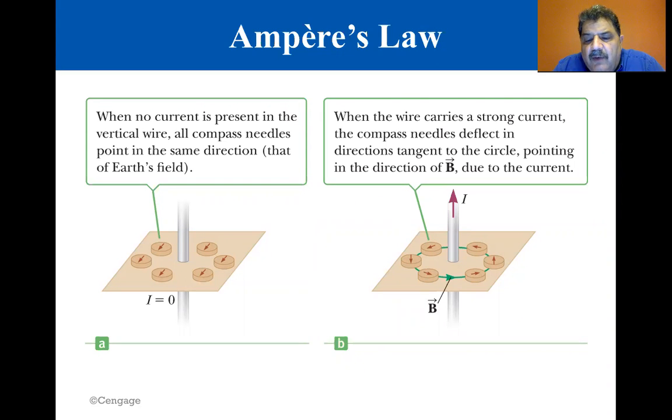When there is no current in the wire, as shown in the figure on the left, all needles point in the same direction, that of the earth's field, as one would expect. When the wire carries a strong steady current, as shown in the figure on the right, the needles all deflect in directions tangent to the circle.